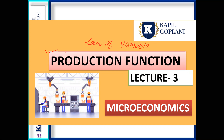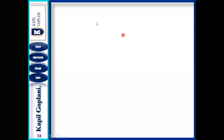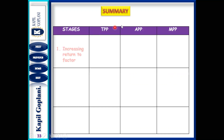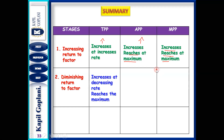We have seen how many stages there are. There are three stages: increasing returns, diminishing returns, and negative returns. These are the three stages according to your MP. I discussed two stages in detail. In the first stage — increasing return to a factor — TP increases at an increasing rate, AP increases and reaches its maximum point, and MP also reaches its maximum point.